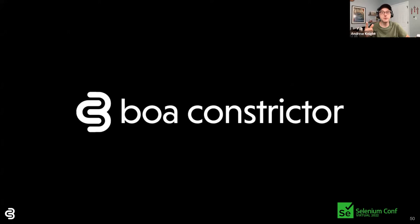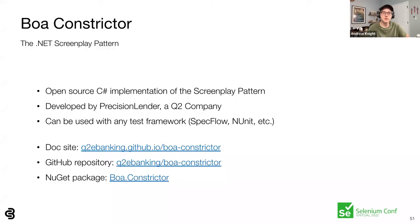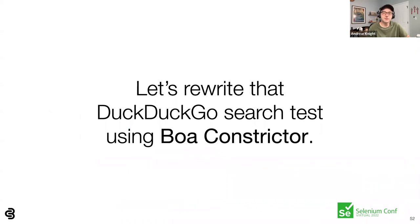Let's learn how to use screenplay with BOA Constrictor. BOA Constrictor is an open source C-Sharp implementation of the screenplay pattern developed at Precision Lender, a Q2 company. It is the cornerstone of Precision Lender's end-to-end test automation solution. It can be used with any .NET test framework like SpecFlow or NUnit. The repository is Q2eBanking/BOAConstrictor and the NuGet package is BOA.Constrictor. All the code shown in this talk is available in the BOA Constrictor library, and you can take a full tutorial to get hands-on with the code.